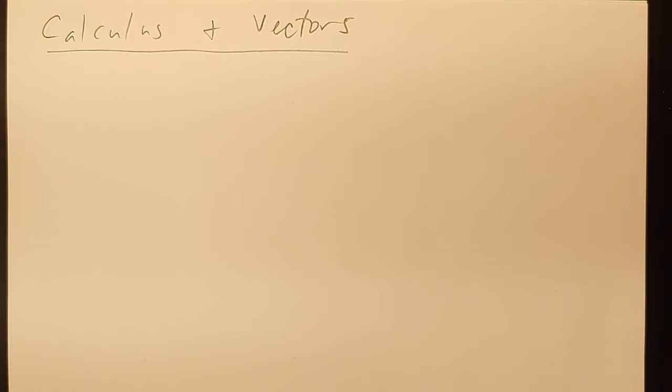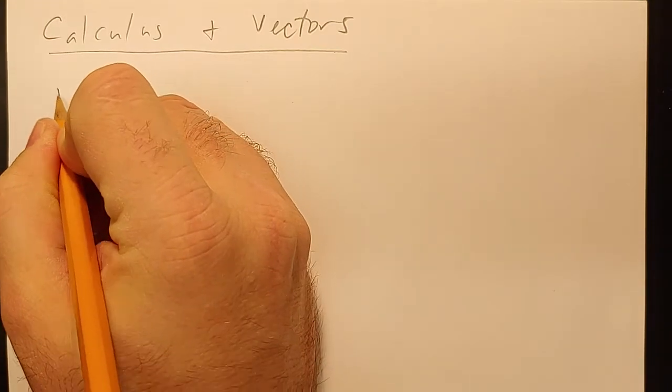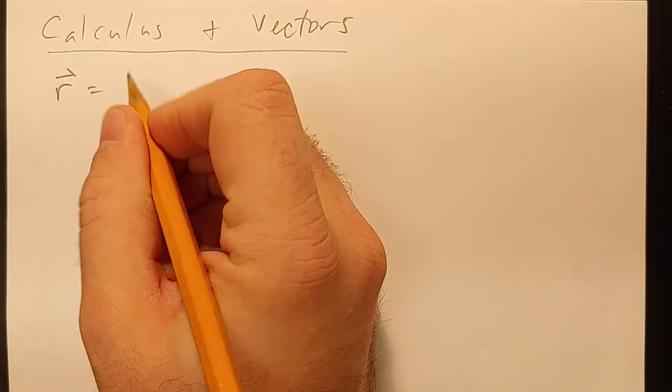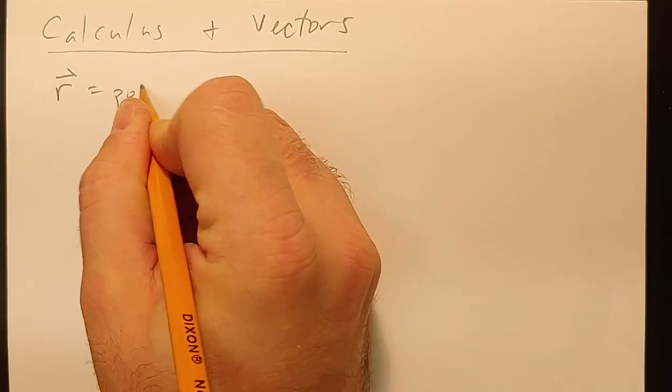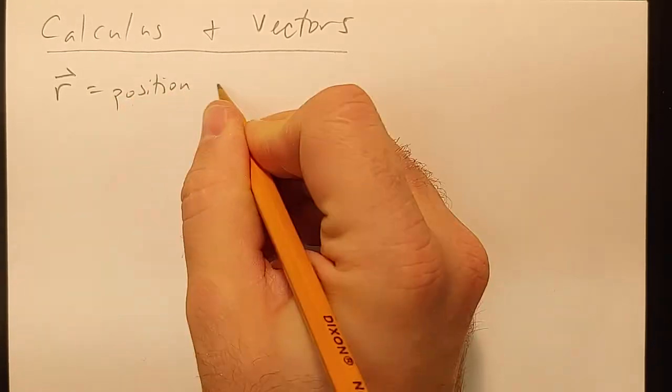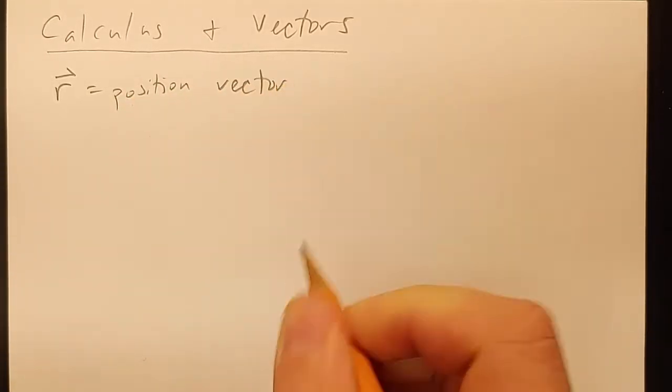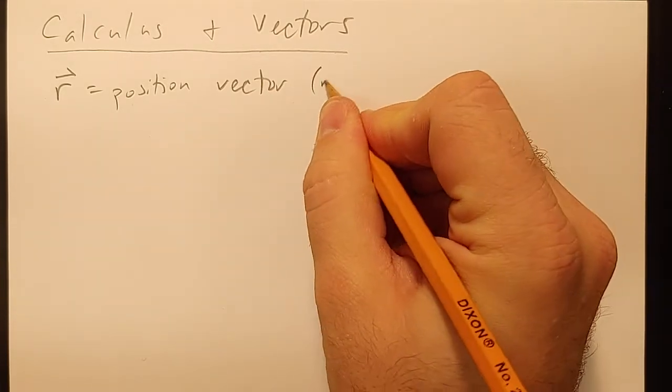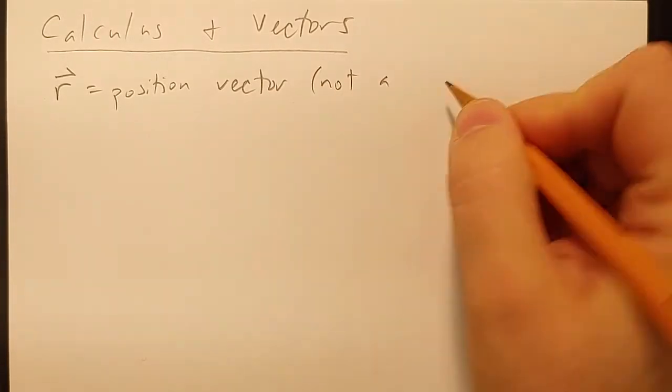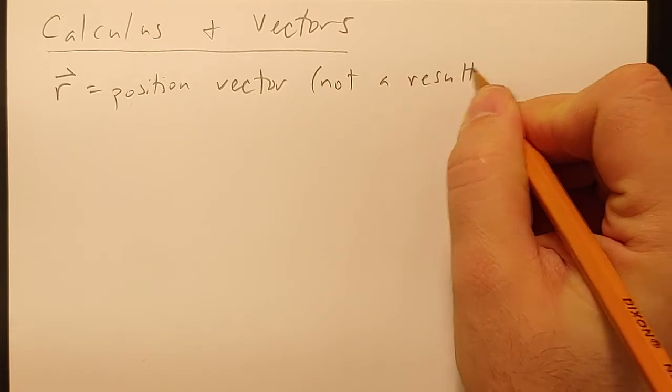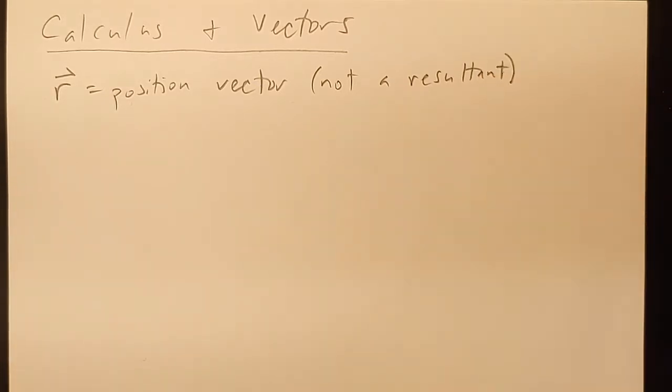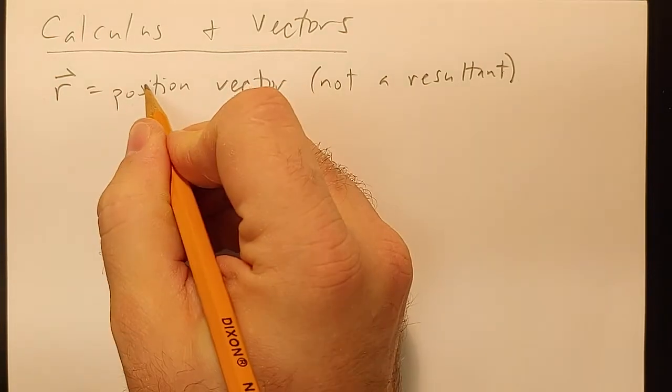In this lecture, in these calculus notes, and this is the same notation the book uses, when I say r, that's going to be a position vector, not a resultant. So I know we've been using r as the resultant sometimes, but for this to make sense, r represents specifically position.